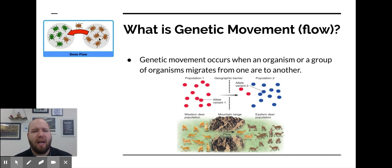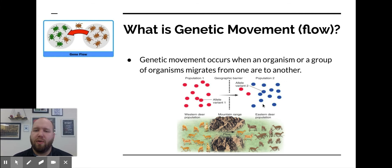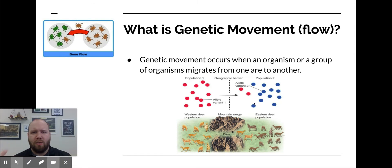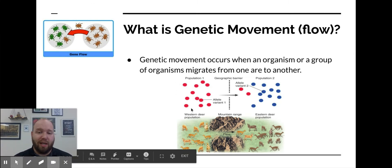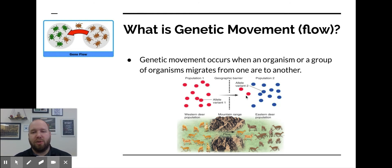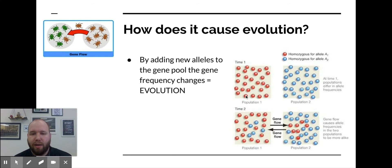Basically, the idea is if you have two different populations and individuals from one gene pool with its own unique genetic makeup come over into a different gene pool — by moving those genes from one area to the other, you've now changed both gene pools. The frequencies are different, and now you have evolution.